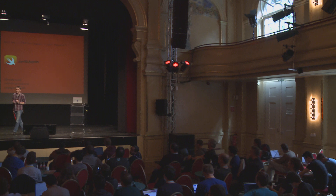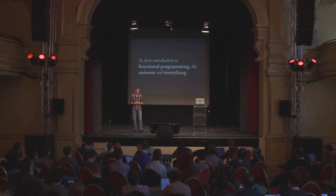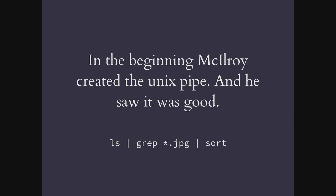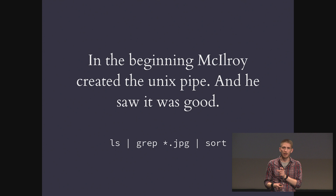Let's get to some code and some reactivity. First, a short introduction to functional programming, the universe, and everything. Sometimes you want to learn about a new topic and it's interesting to look at something old, something you already know. In the beginning, McIlroy created the Unix pipe and he saw it was good — you have different little programs, you have processes, you pipe things into each other, you have error handling built in. If an error occurs, just stop, don't continue, give me an error. So we have stdin, stdout, and stderr. That's actually everything you need to know about functional programming, at least as an object-oriented developer.